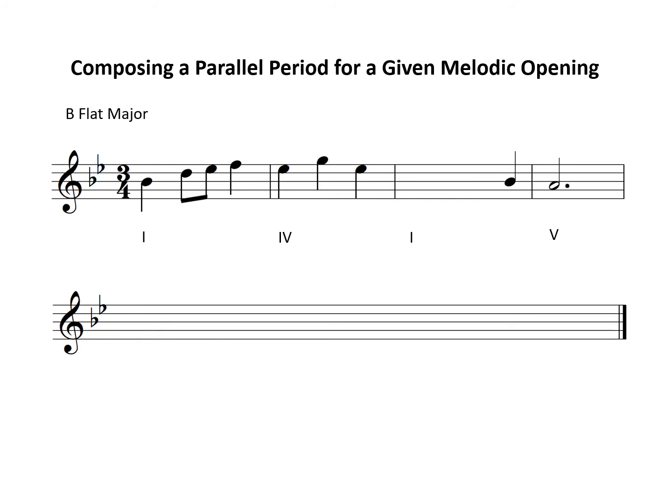Then we need to add notes that work with the tonic chord to fill in the remaining beats of bar 3. Remember that melody notes generally move by steps or skips, but they can move by leap if the notes create a broken chord. It's also good to use rhythms from the opening measures for a unified melody. I'm going to use the same rhythm as the opening bar with the notes of the tonic chord.